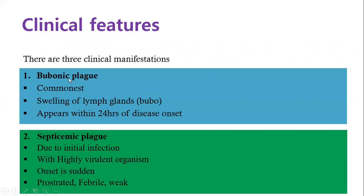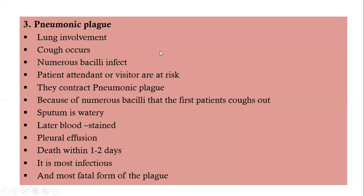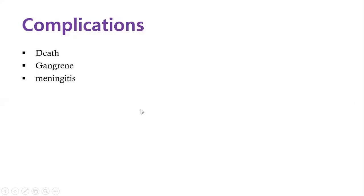The three clinical manifestations are: bubonic plague — the most common form, characterized by swelling of the glands appearing quite early; septicemic plague — sudden onset with systemic problems like fever and weakness; and pneumonic plague — involving lung involvement, which takes more time to develop but becomes very infectious. The lungs being affected can lead to respiratory depression and death.